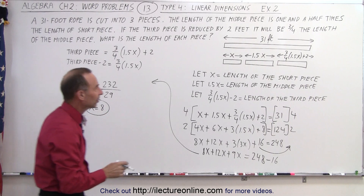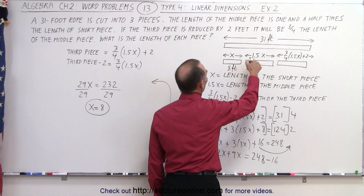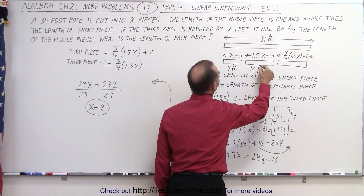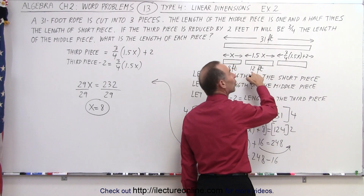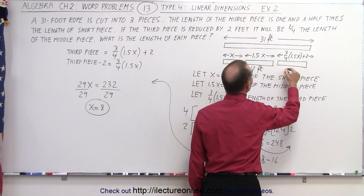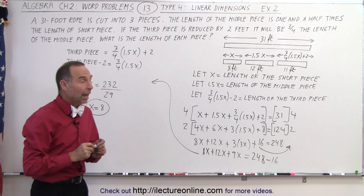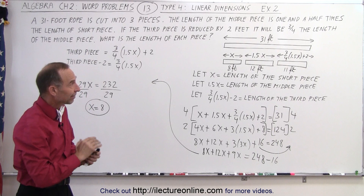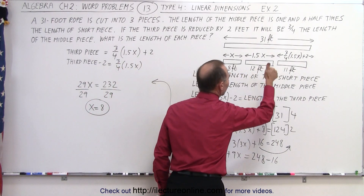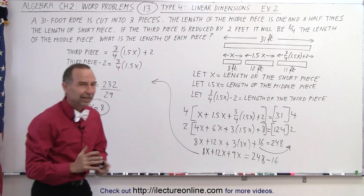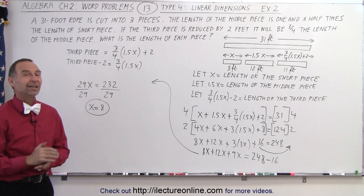Now we can figure out the length of each piece. The short piece is 8 feet. 1.5 times 8 feet is 12 feet for the middle piece. For the third piece, three quarters of 12 is 9, plus 2 is 11 feet. Just to make sure: 8 plus 12 is 20, plus 11 is 31. Good check — that is the correct answer, and we have the length of each of the three pieces. And that's how it's done.